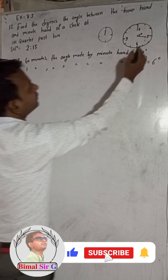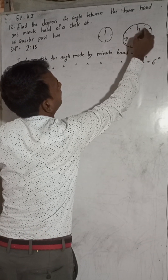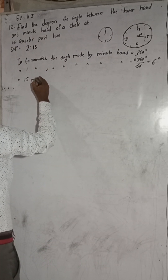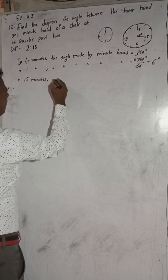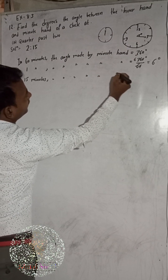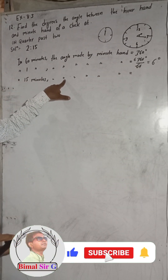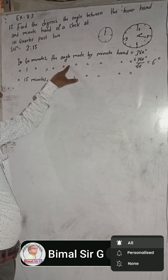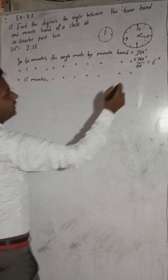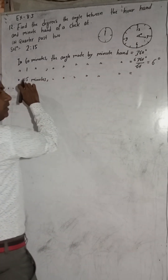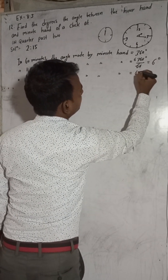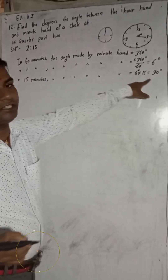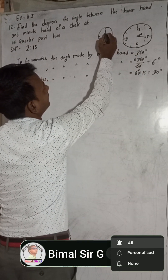And in 15 minutes — because this minute hand is at 15 minutes — so I have to calculate the angle made by this minute hand in 15 minutes. Using the unitary method: in one minute it makes 6 degrees, so in 15 minutes we multiply 6 into 15, which gives 90 degrees. So the minute hand is at 90 degrees.